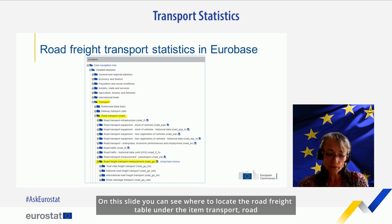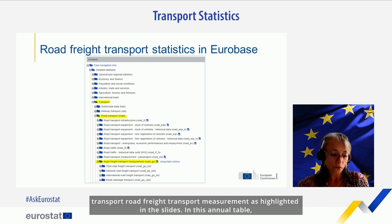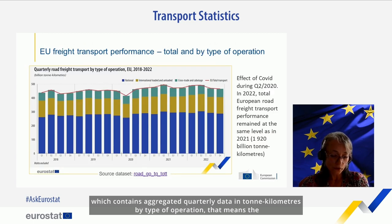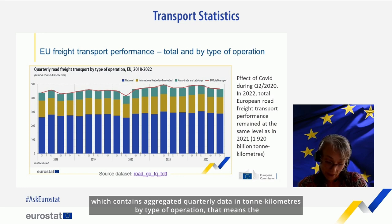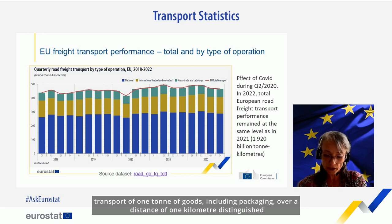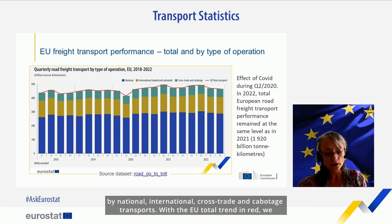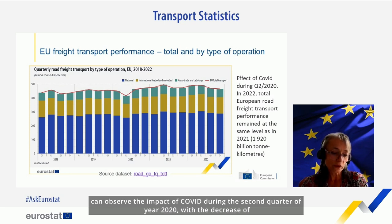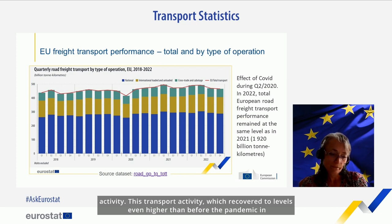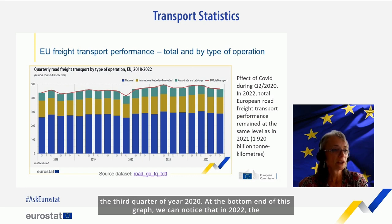On this slide you can see where to locate the road freight tables under transport, road transport, road freight transport measurement. In this annual table, which contains aggregated quarterly data in ton kilometres by type of operation — that means the transport of one ton of goods including packaging over a distance of one kilometre — distinguished by national, international, cross-trade and cabotage transport. With the EU total trend in red, we can observe the impact of COVID during the second quarter of 2020, with a decrease of activity, which recovered to levels even higher than before the pandemic in the third quarter of 2020.